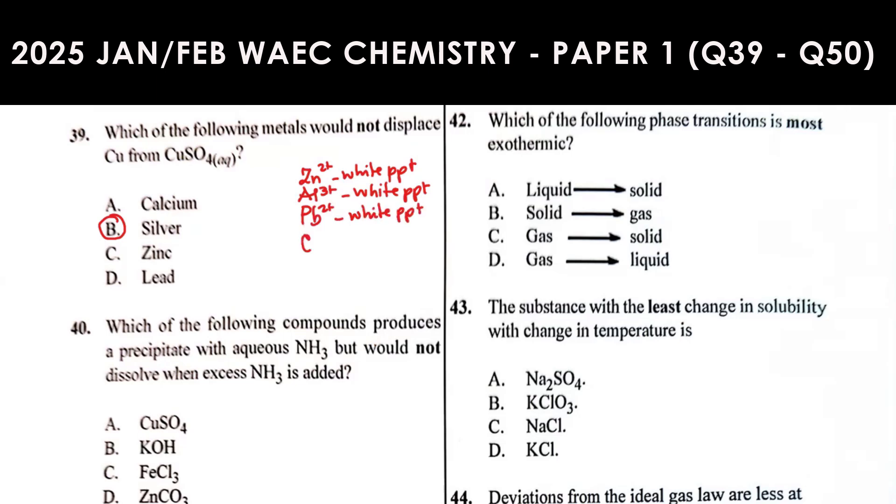Copper 2 ion gives blue precipitate. Iron 2 ion gives green precipitate, dirty green. Iron 3 ion gives reddish brown precipitate. All these ions produce precipitates with ammonia.